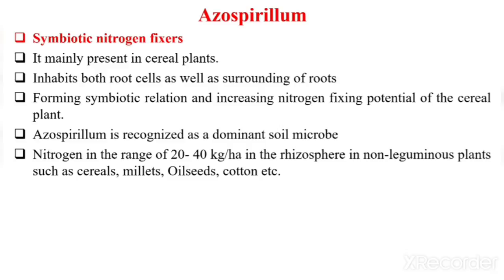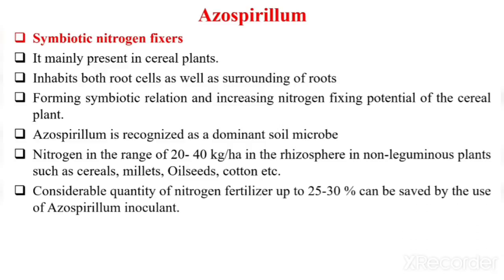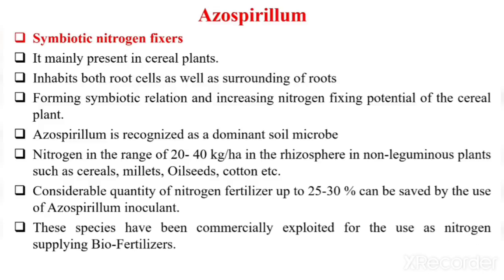Azospirillum is effective in crops such as cereals, millets, oilseeds, and cotton. A considerable quantity of nitrogen fertilizer — up to 25 to 30% — can be saved by the use of Azospirillum inoculant. These species have been commercially exploited for use as nitrogen-supplying biofertilizers.